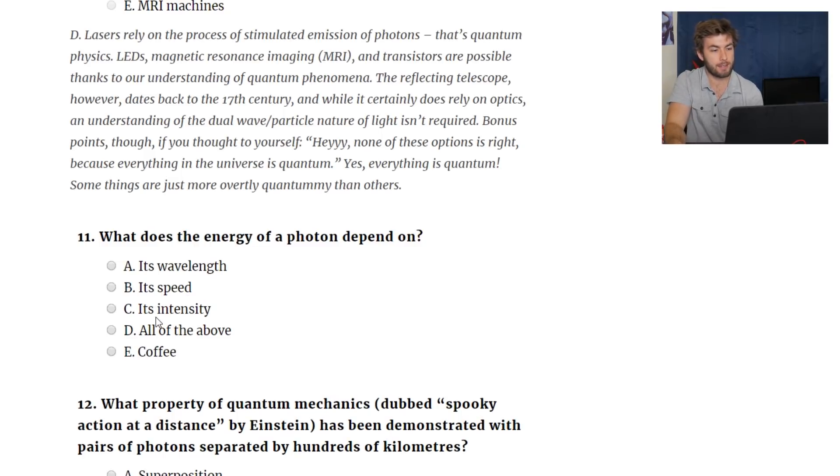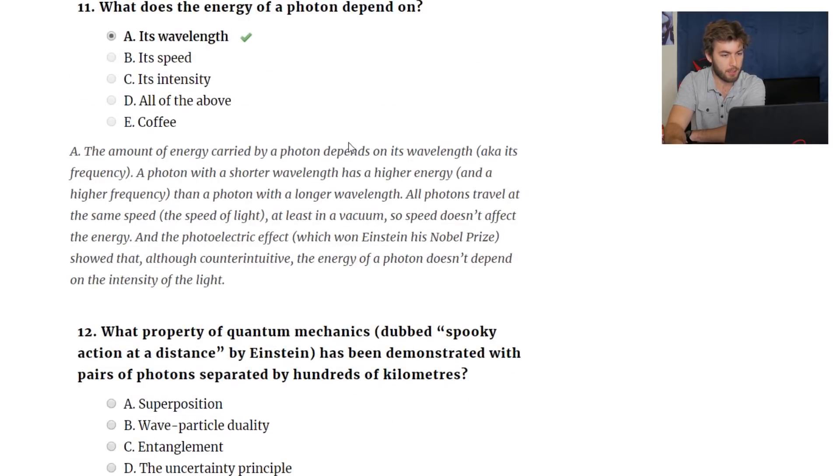Speed. Does the energy of the photon change if it's passing through a medium? Right? Because that's the only way the speed of light could change. But then again, the individual photons aren't changing their speed, they're just interacting with, you know, they're basically scattering. Its intensity, well, no, that's exactly what the photoelectric effect disproved, that the energy depends on the intensity. So it's gotta be the wavelength. Amount of energy depends on the wavelength. A photon with a shorter wavelength has a higher energy.